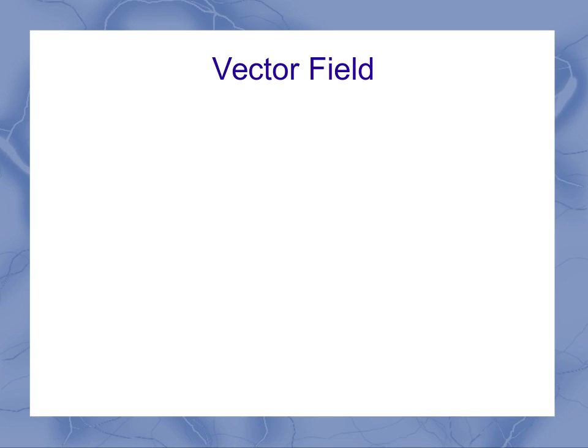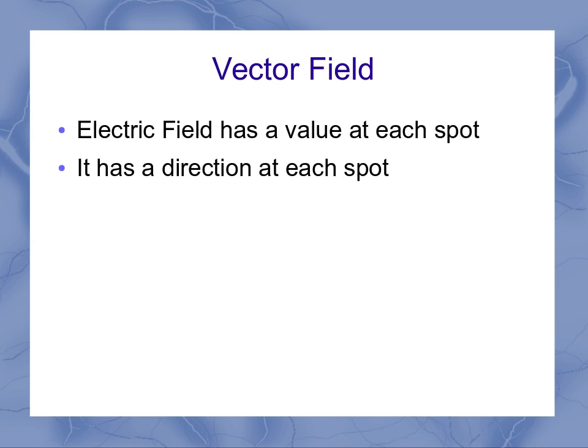We need to stress one thing about this electric field for you to really have a picture of it. It's what's called a vector field, and that means that every spot has a value for the electric field, but it also has a direction at each spot.